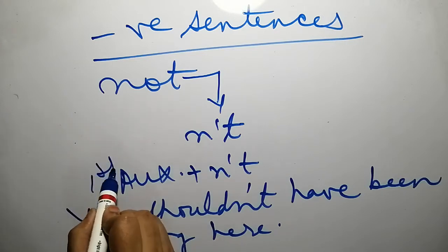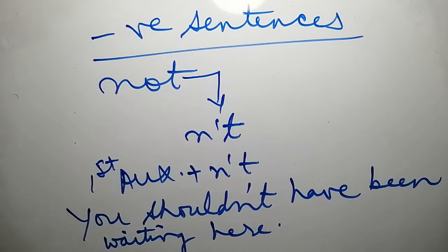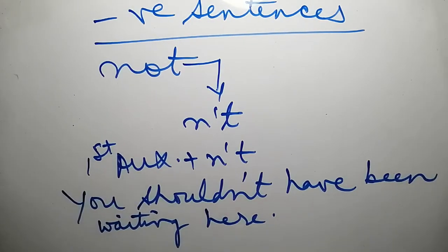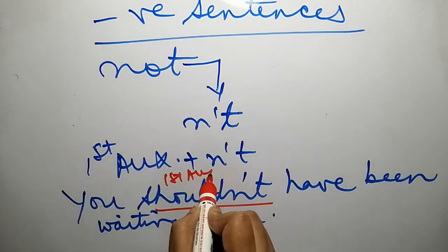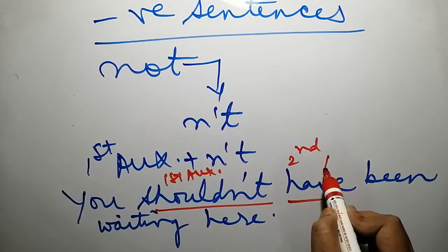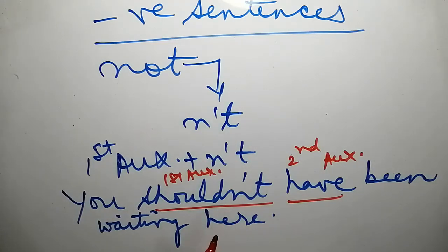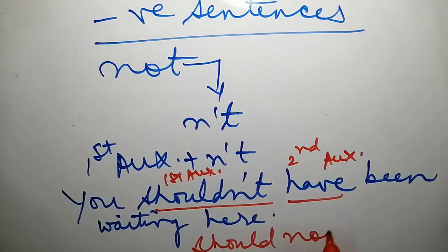When there are two auxiliaries in a sentence, the abbreviated form n't is attached to the first auxiliary. For example, in 'you shouldn't have been waiting here', the first auxiliary is 'should' and the second auxiliary is 'have'. We attach n't to the first auxiliary — 'should' — giving us 'shouldn't', which is the contracted form of 'should not'. So instead of writing 'should not', we write 'shouldn't' in short form.